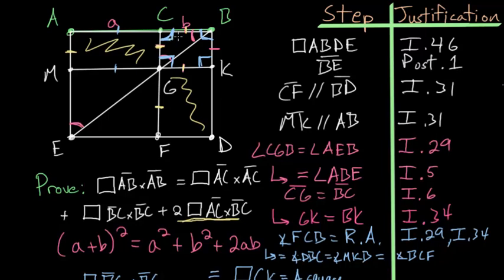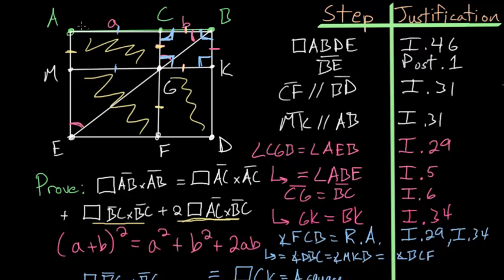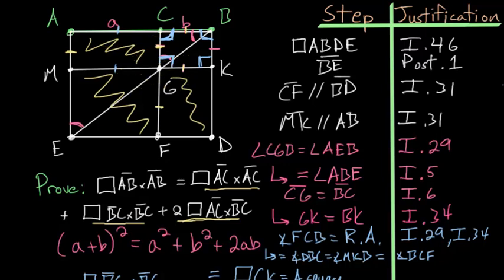So we've proven that the square on BC is here, the square on AC is here, and the two rectangles — both contained by AC and BC — are here. When you add all of these parts together, you get the entire square on AB. This completes the proof, so we end by writing QED.